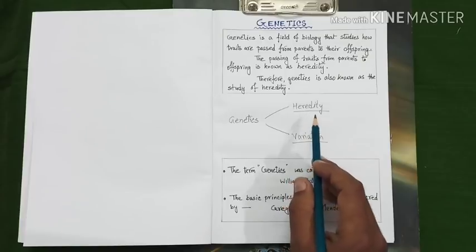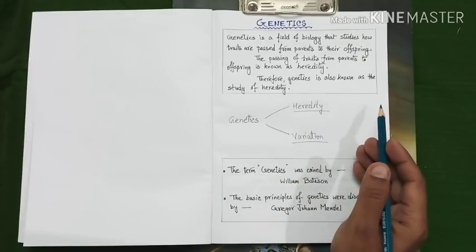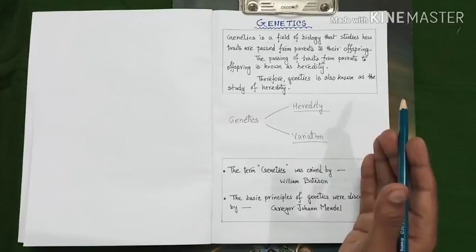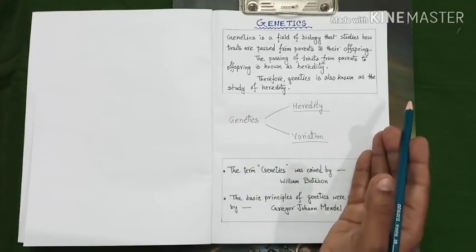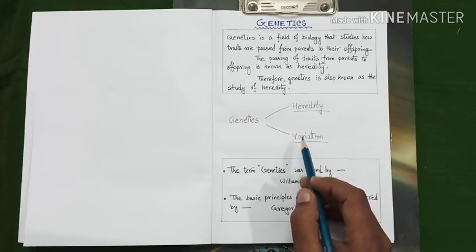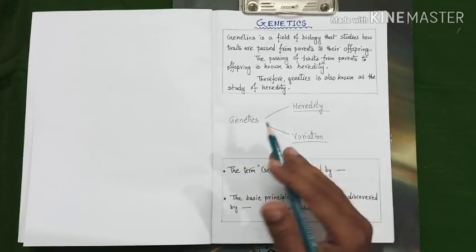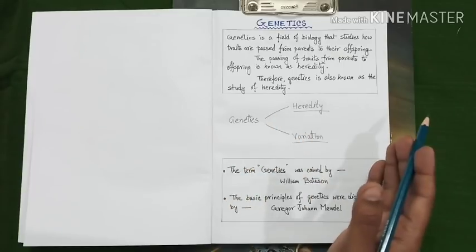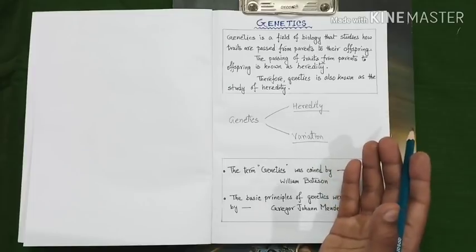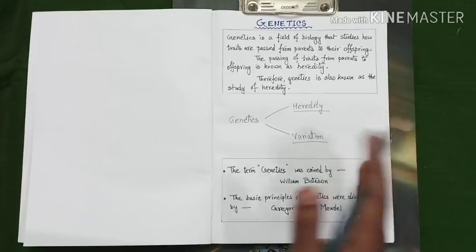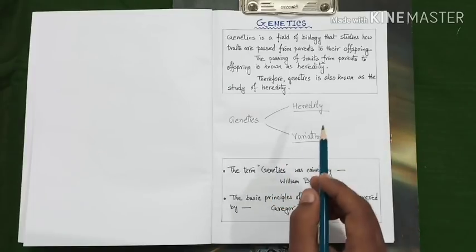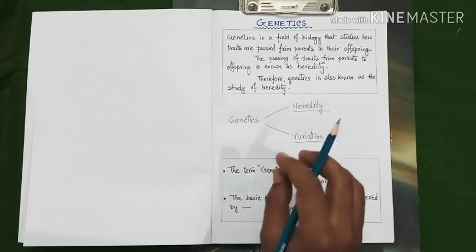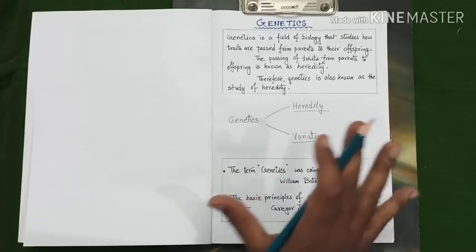What is heredity? Heredity is the transmission of characteristics from parents to the offspring, from the previous generation to the next generation. And what is variation? Variation is the differences between characteristics between two individuals. We all know that even siblings are different from each other. Thus, these two terms are quite necessary to understand the basic concept of genetics.